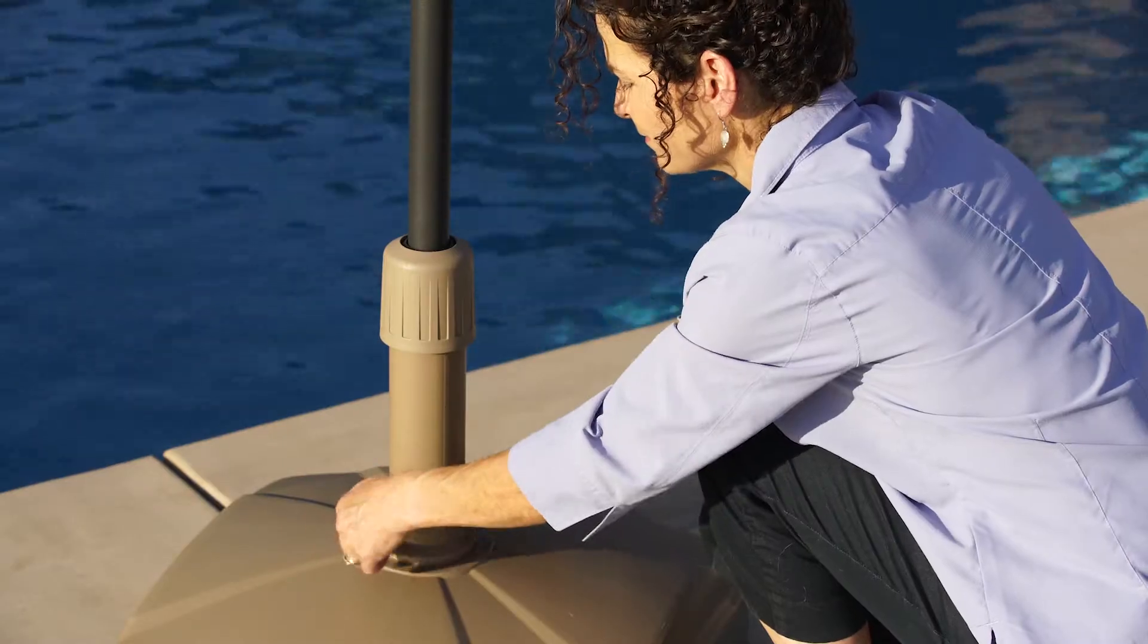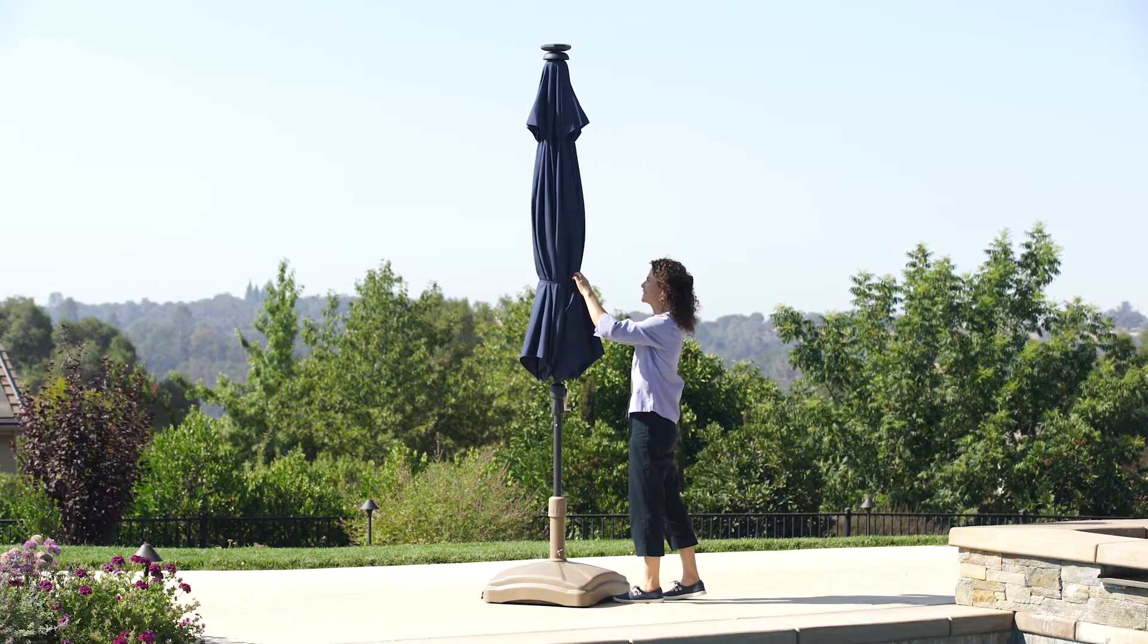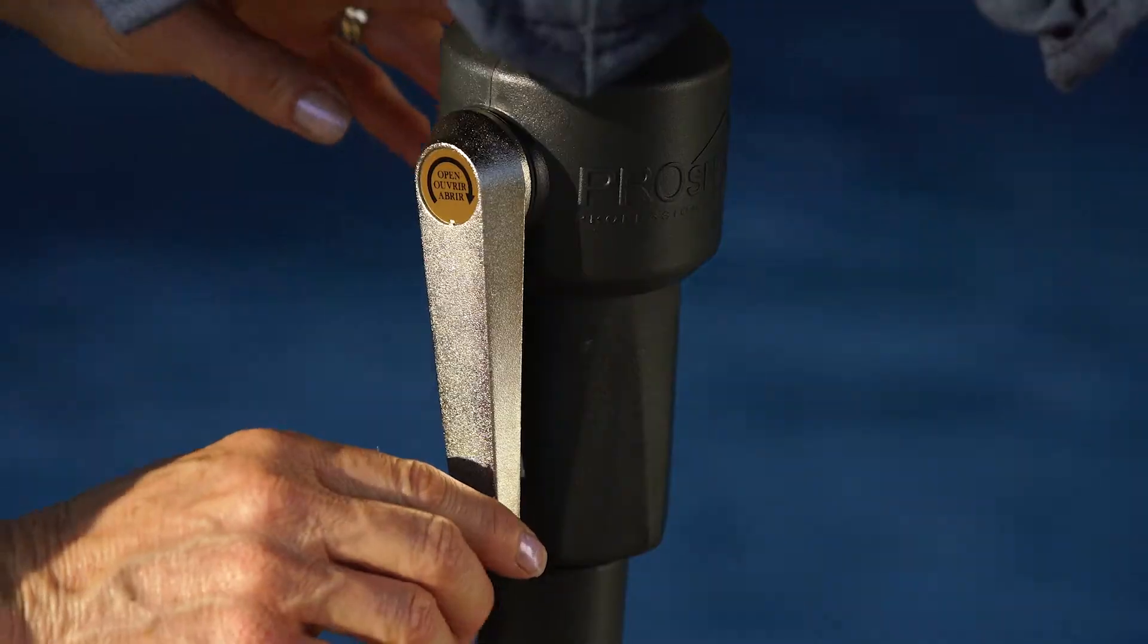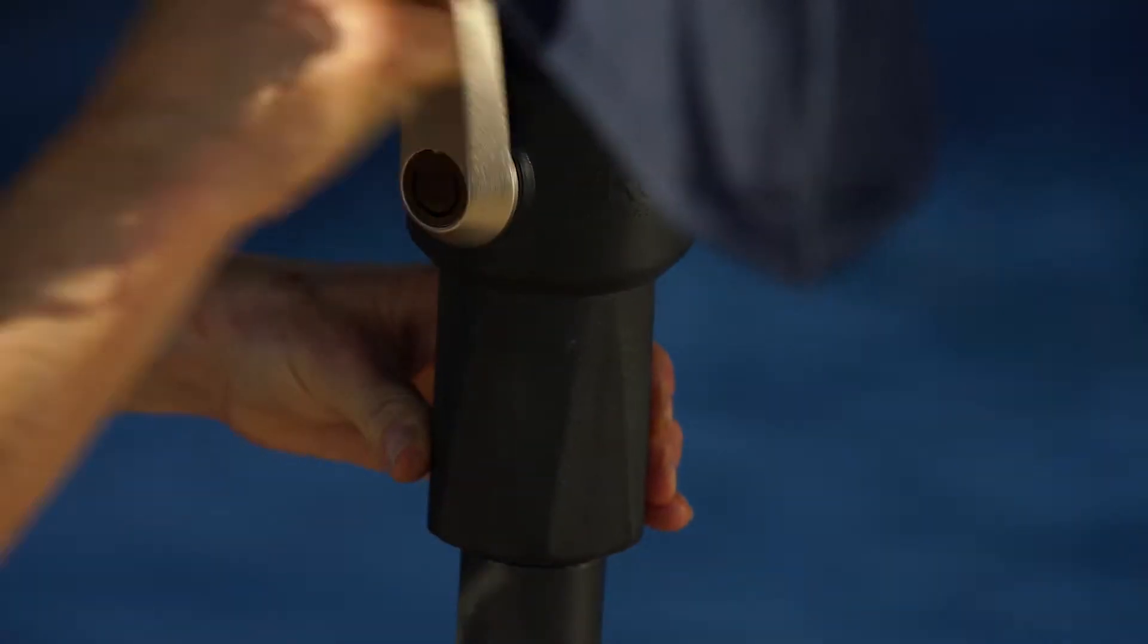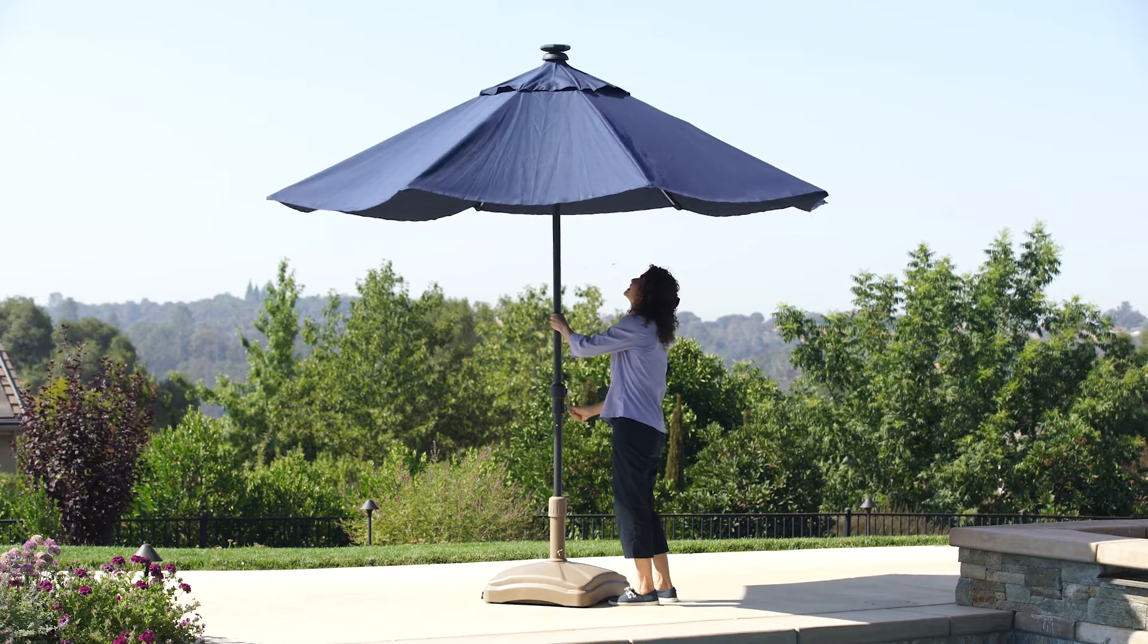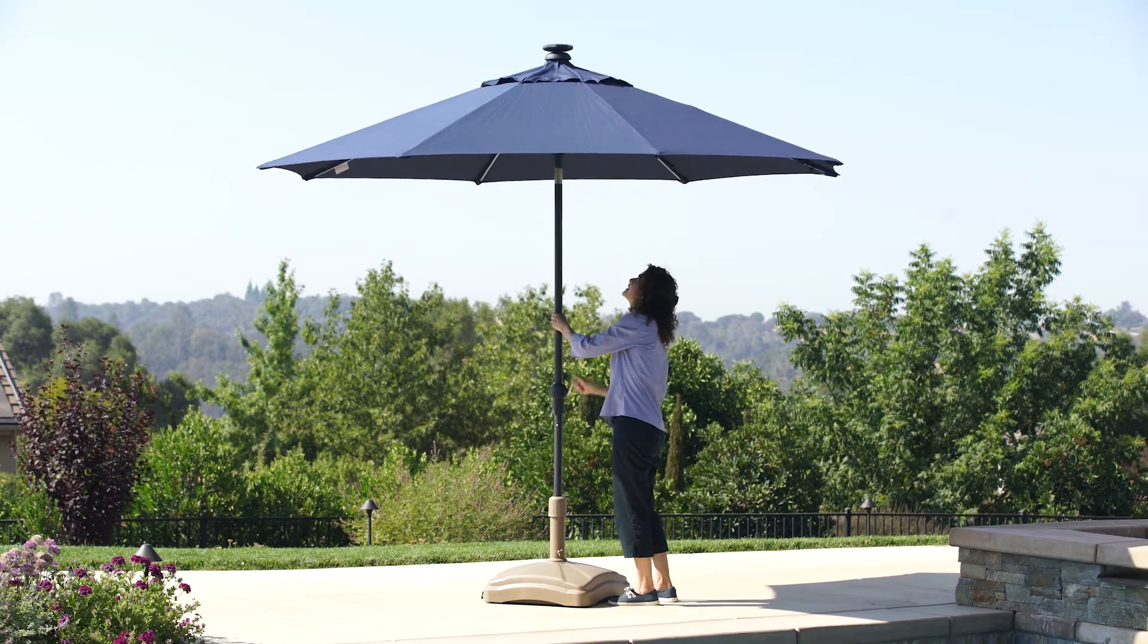To use the umbrella, gently pull apart and separate the ribs into their natural open position. Turn the crank clockwise until the hub has reached the stop ring. When opening the umbrella, make sure to always crank in a clockwise direction.